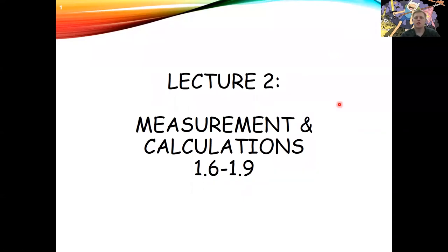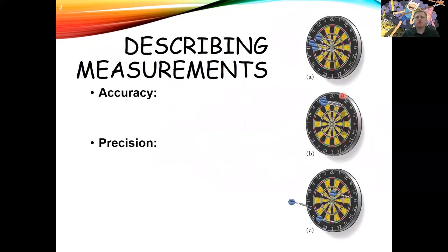This is the video for our lecture two where we'll be talking about measurement and calculations. We're going to start by talking about how we describe measurements. There are two big descriptors that we use when talking about measurements: accuracy and precision.